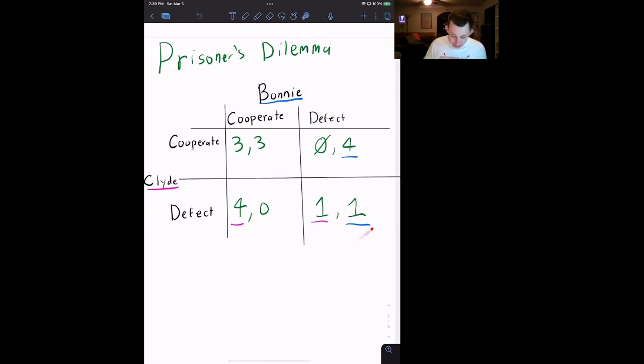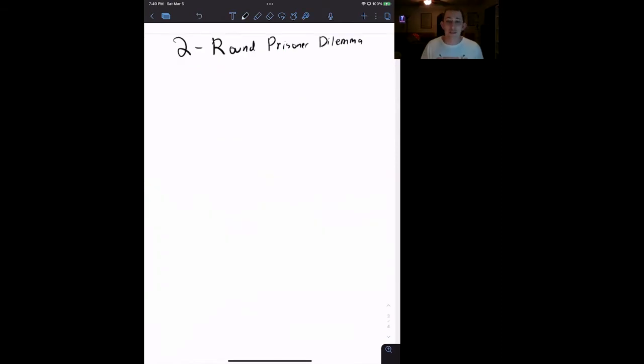We know that the Nash equilibrium, when we play this game once, is defect, defect, and those are dominant strategies. So let's say that I want to play the prisoner's dilemma twice in a row. How do I write that in sort of an extensive form way that's not an extensive form way?